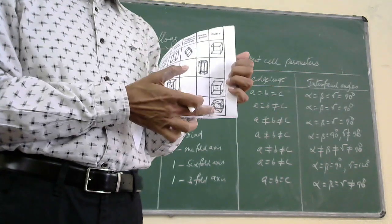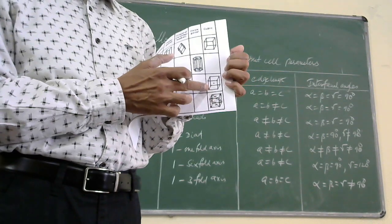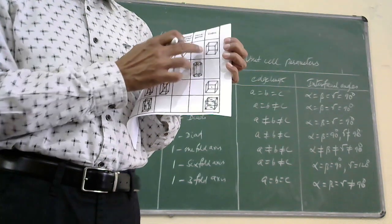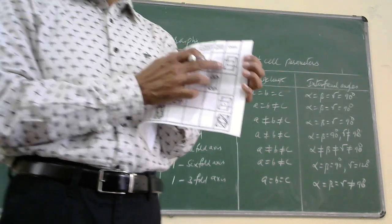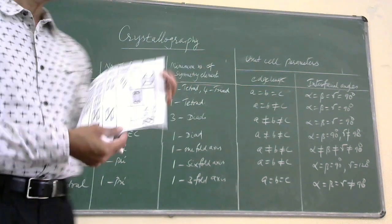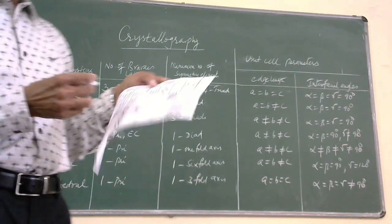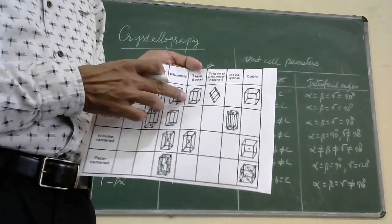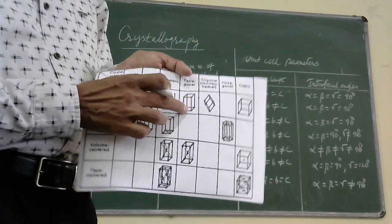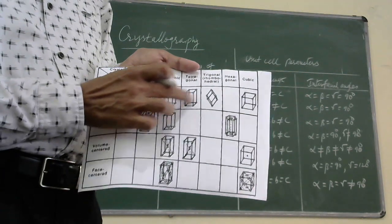In the face-centered cubic system, there are 12 lattice points in total. In body-centered cubic, the lattice points are the corners and the body center. In simple cubic or primitive cubic, the lattice points are only at the corners. In the tetragonal system, only two types of arrangement are possible. In the primitive arrangement, particles are only at the corners. In tetragonal, two sides are equal (a = b) but height c is different, and all interfacial angles are 90 degrees.